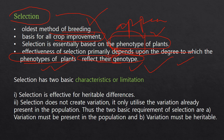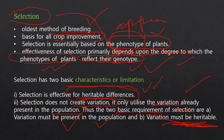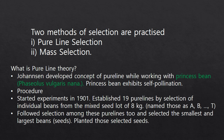Selection has two basic characteristics or limitations. First, selection is effective only for heritable differences. It does not create variation — it just utilizes variation that is already present in the population. So the two requirements of selection are: the variation must be present in the population, and the variation must be heritable. If there is no heritability, there is no use of selection at all.